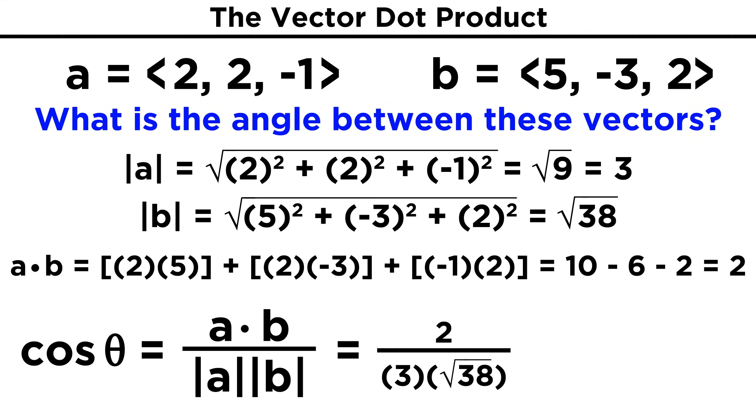So plugging everything in, we get two on the top, and then three times root thirty-eight. That is equal to the cosine of the angle between the vectors.